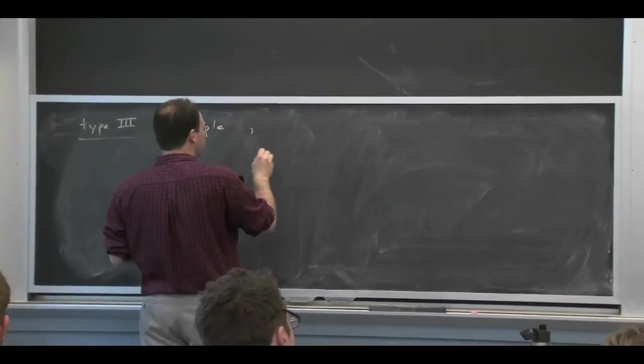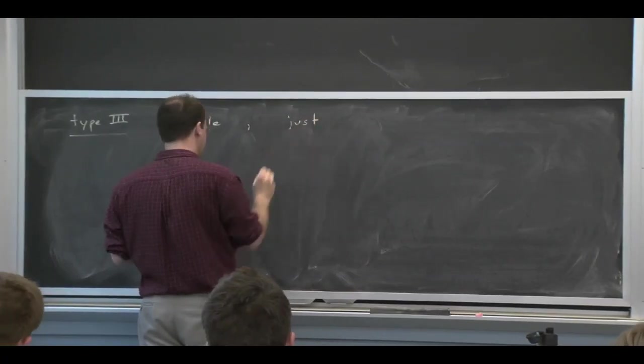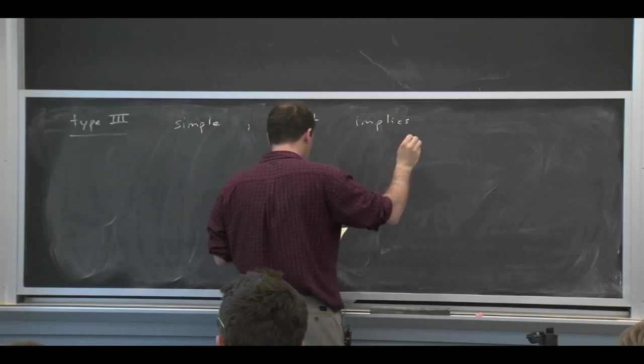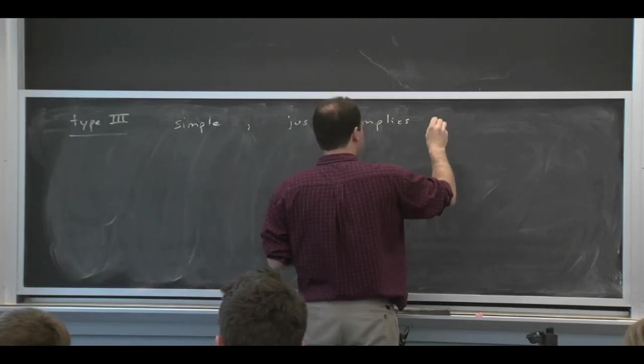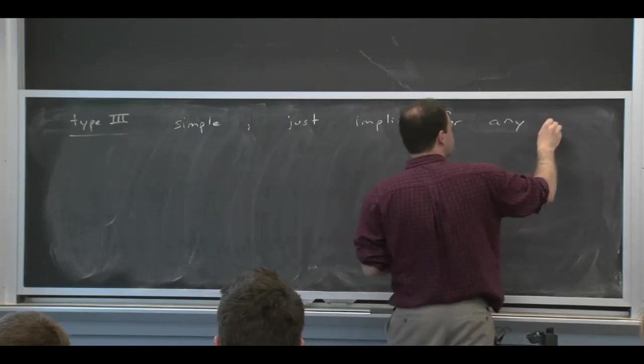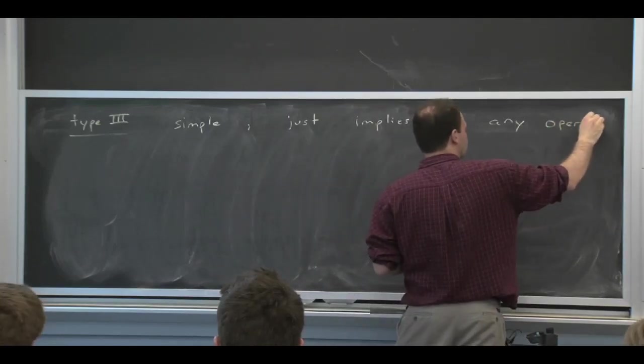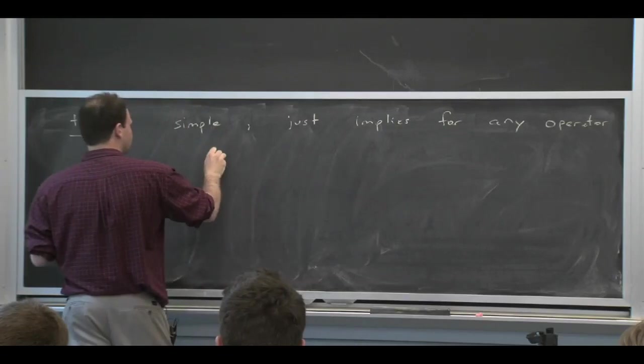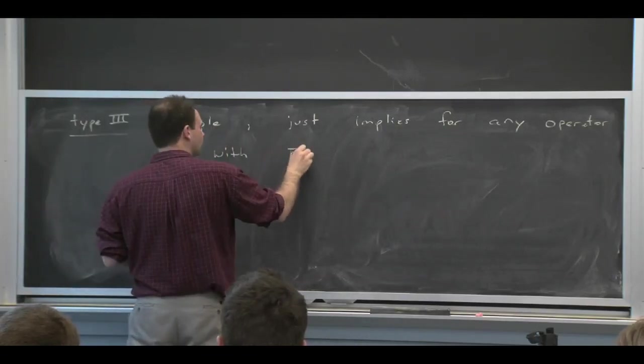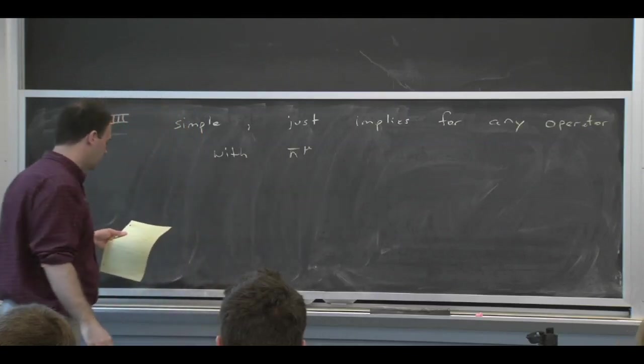And what the outcome is is very simple. It just implies that any operator that has an n must have a corresponding n bar sitting next to it effectively. So I'll give you some examples. So really, if you have, let's just say it this way, if you have an n bar mu in the numerator,